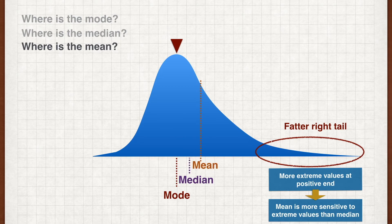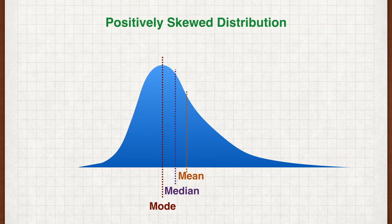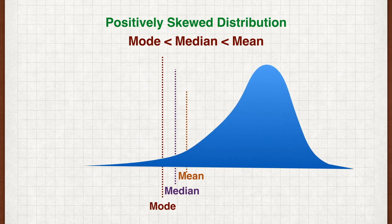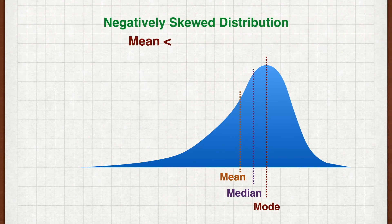So this is something you have to remember: for a positively skewed distribution, the mean is larger than the median, which is larger than the mode. Reverse the arguments and you get the reverse for negative or left-skewed distributions — the mean is smaller than the median, which is smaller than the mode.